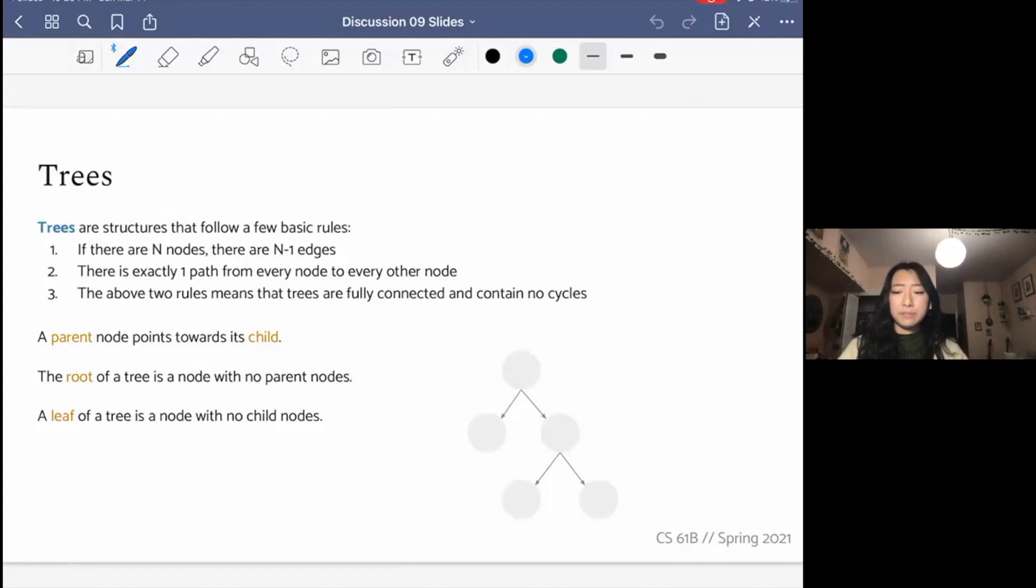We've already seen trees, right? We've seen binary search trees, left-leaning red-black trees, and 2-3 trees, and hopefully we're picking up on some patterns. At their heart, trees are just structures that follow a few basic rules, and so they have n nodes and n-1 edges. For example, here we have five nodes and four edges.